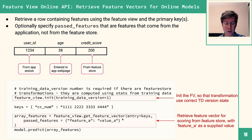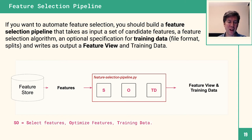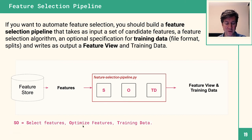Feature selection can also be turned into a pipeline — a feature selection pipeline — though it's an optional step. You might want one if you have a large volume of training data and it takes hours to create. You could schedule it to run overnight, so when you arrive in the morning the training data is ready, including all new data that arrived since the previous day.